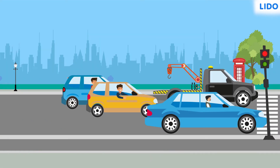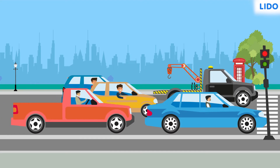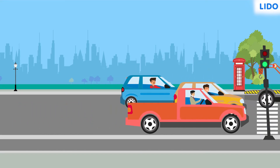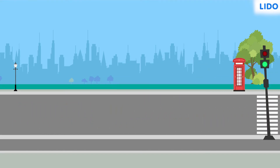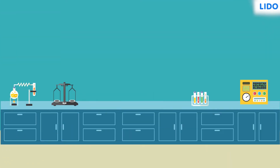Likewise, what do you do when you are stuck in a car at the traffic signal? You would wait for the traffic signal to turn green, right? The green light at the signal indicates that you can start driving. Similarly, there are indicators used in science laboratories to show whether substances are acidic or basic.